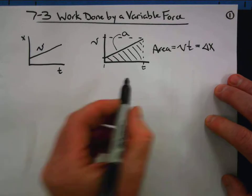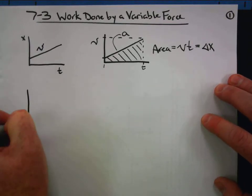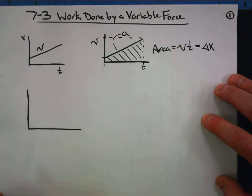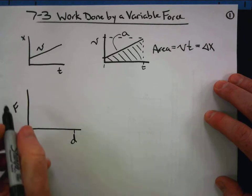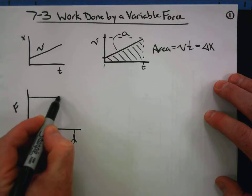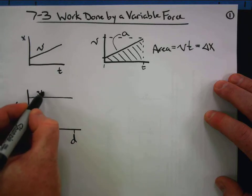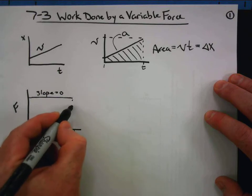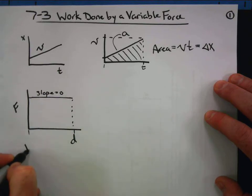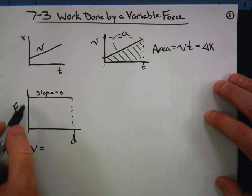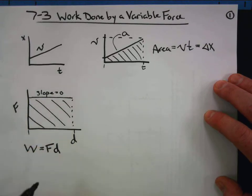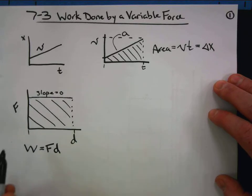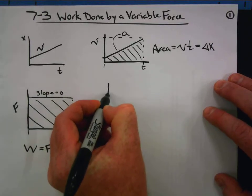Now we're going to look at the same way of viewing something, but with different quantities. We're going to look at a force applied to an object while the object moves a given distance. At first we started with forces that were constant, so on this graph the slope is zero. If we wanted to find the work done by that constant force, we would take the force multiplied by the distance — that gives us the area under that line for some distance.